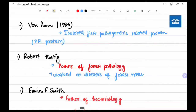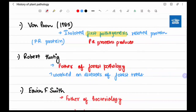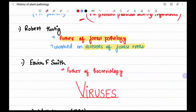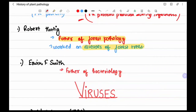Van Lune in 1985 isolated the first pathogenesis-related proteins — PR proteins — which are produced during infection. Robert Hartig is the father of forest pathology and worked on diseases of forestry. Erwin F. Smith is the father of bacteriology.